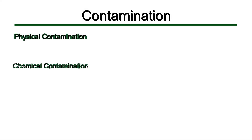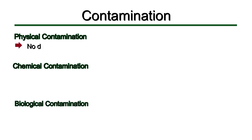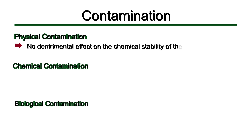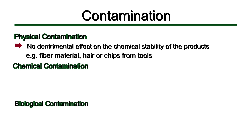Contamination can also be classified into physical contamination, chemical contamination, and biological contamination. In physical contamination, there is no detrimental effect on the chemical stability of the product. For example, fibrous material, hairs, or chips from the tools of any equipment may not cause any chemical change in the product.